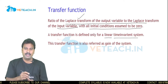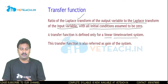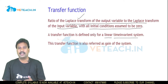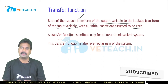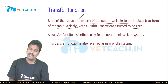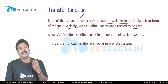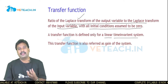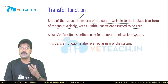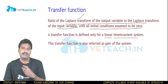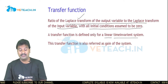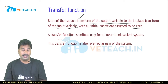A system is said to be linear if the components present in the system obey the principle of superposition and homogeneity. Such systems are known as linear systems. A control system is said to be linear and time-invariant if it contains linear components and the component parameters do not vary with respect to time. A transfer function is defined only for such linear time-invariant systems.